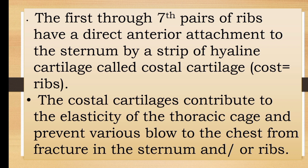The first through seventh pairs of ribs have a direct anterior attachment to the sternum by a strip of hyaline cartilage called costal cartilage. The costal cartilage contributes to the elasticity of the thoracic cage and prevents various blows to the chest from fracturing the sternum or ribs.